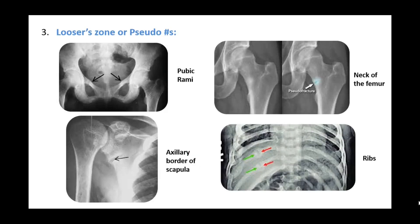Looser zones, also called pseudo fractures, are a very important feature seen in osteomalacia. They are due to rapid resorption or slow mineralization, mainly seen around the callus. They can appear in the pubic rami as a zone of haziness or sclerosis, giving an appearance of a fracture — though it is not a complete through-and-through fracture.